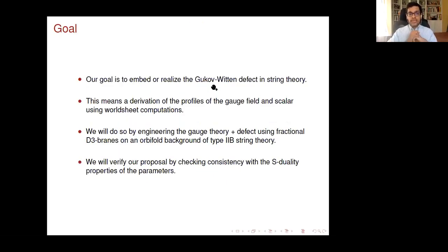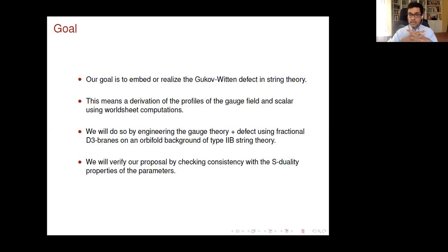The goal is to embed this surface defect in string theory — to derive the profiles of the gauge field and scalar using string perturbation theory. We engineer this gauge theory and defect using fractional branes in Type IIB string theory: D3-branes to realize the N=4 theory, and an orbifold solution to realize the defect. At the end, we check our proposal by showing consistency with the S-duality transformation.